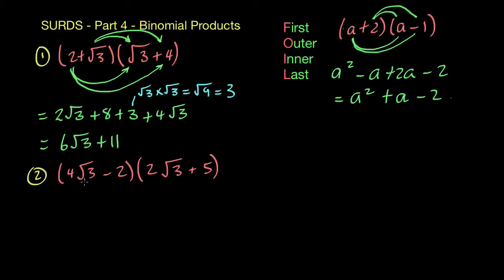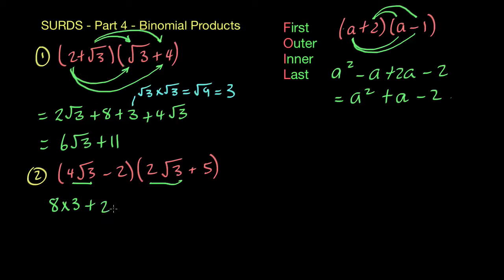For this next example, we multiply the first terms, then the outer terms, the inner terms, and then the last terms. So we've got 4 root 3 times 2 root 3: multiply the coefficients to get 8, and root 3 times root 3 gives 3, so that whole thing is 8 times 3, which is 24. Then we've got 4 root 3 multiplied by 5, so 4 times 5 gives you 20 root 3.